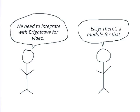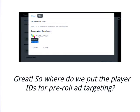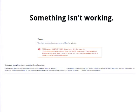A classic example: the client says, 'We need to integrate video with Brightcove — we just need to get Brightcove video on our Drupal site.' We say, 'No problem, there's a module for that, this will be an hour.' Then you deliver, and they say, 'This is fine, but we need to put our player IDs in to target our pre-roll ads.' And you say, 'The module doesn't actually do that. We can do it, but it's going to take 10 hours instead of one.' The client told us what they thought we needed to know. They assumed that when they said 'Brightcove,' it would include all the stuff they have in Brightcove, whereas that's not really how it works.